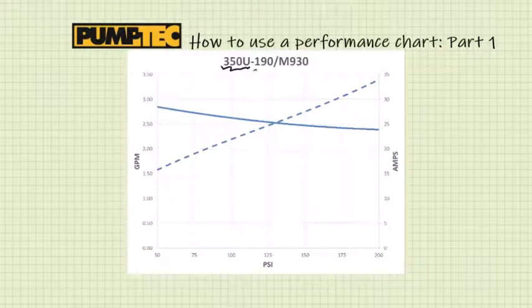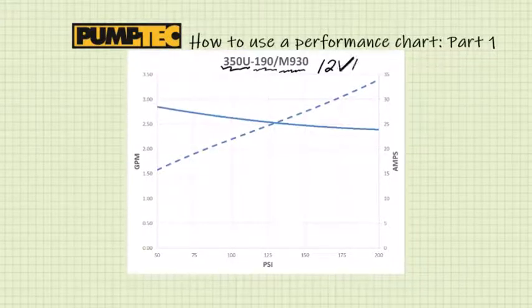For a 350U, which is the pump series, 190, which is the cam offset, and M930 motor, which runs on 12 volt DC power.